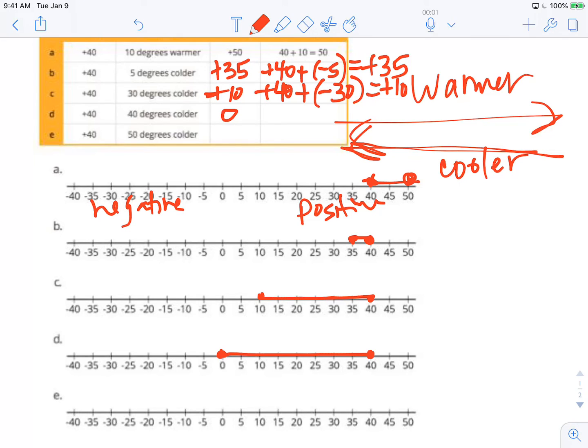So that change can be written as positive 40 plus a drop or negative 40. Drop of 40 will leave us at 0. Notice that any number added to its opposite always equals 0. So positive 40 plus negative 40 is going to take us right back to 0.